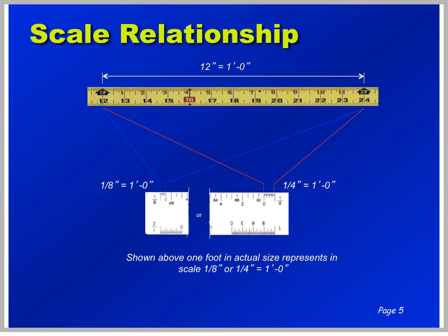Note, as we shrink the scale down, we can show less and less information about the foot. On the eighth inch scale, we can only show every other inch mark, so each little tick equals 2 inches. Or, as seen on the slightly larger quarter inch mark, each tick mark equals 1 inch.